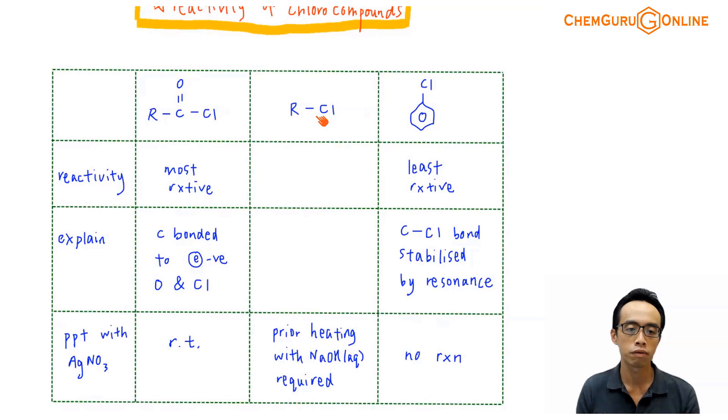In general, in syllabus, we have 3 chloro-containing organic compounds: our acid chloride, halogenoalkane or chloroalkane, and chlorobenzene.